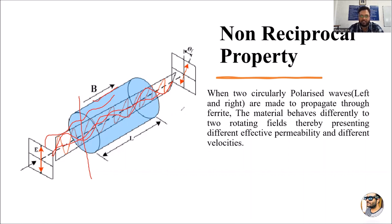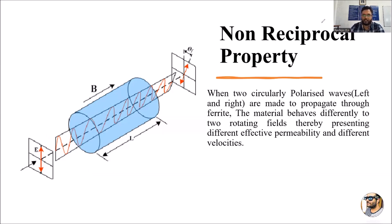The material presents different effective permeability and different velocities to the two polarized waves traveling from the left and right sides. They tend to behave differently when passing through this ferrite device due to its high magnetic properties. This exhibits a non-reciprocal property — a change in the properties of the wave.